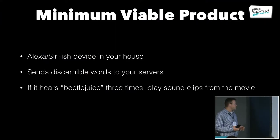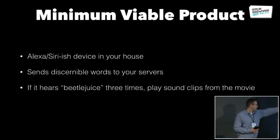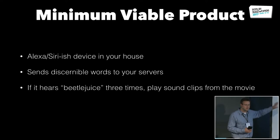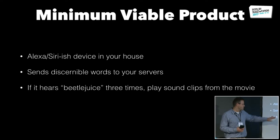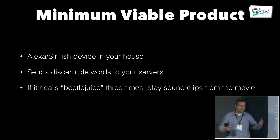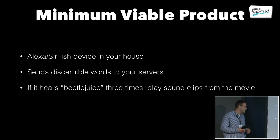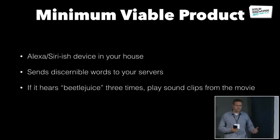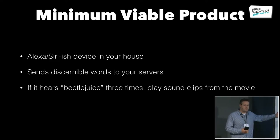I'm going to start off with an example operational app — this is my Beetlejuice app. The minimum viable product is I've got some Alexa/Siri-ish device in my house. It's a microphone that's always listening to me. It sends discernible words to my servers, and if it hears the word Beetlejuice three times, it plays sound clips from the movie. We're going to build that as an app and talk about stream processing and OLTP in the context of these operational apps.